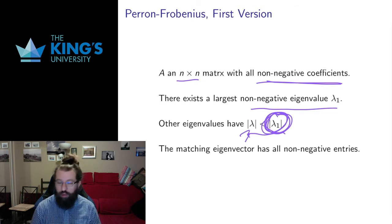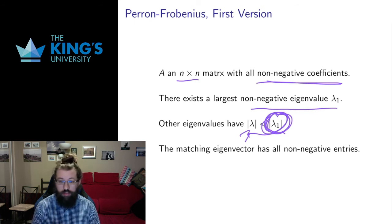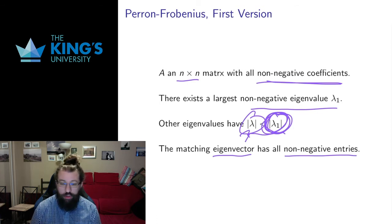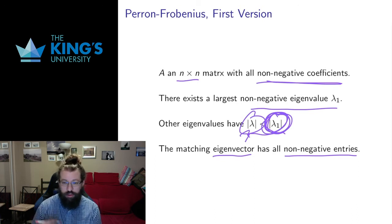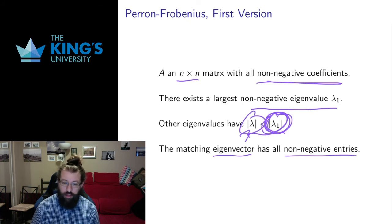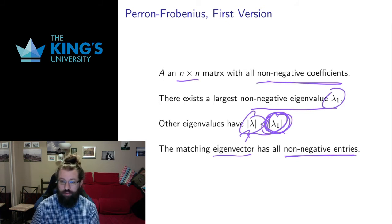Even if some other eigenvalues also give exponential growth, they grow at a slower rate. So the largest eigenvalue really controls the long-term behavior. This largest non-negative eigenvalue represents the largest possible growth. If it corresponds to exponential decay, then all eigenvalues decay. Additionally, the matching eigenvector has non-negative entries, which is important for interpreting the long-term state of systems like population models.